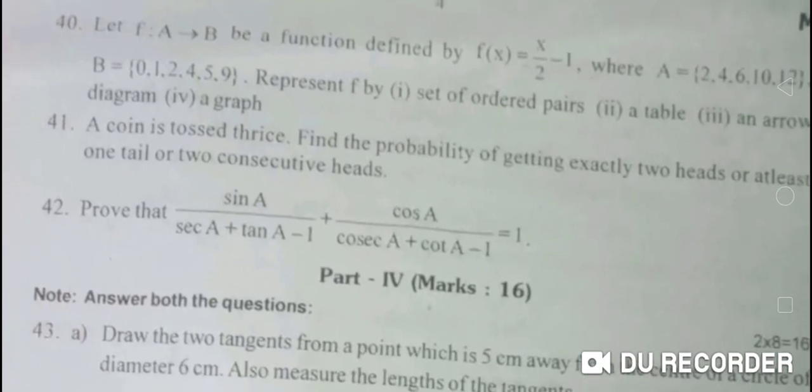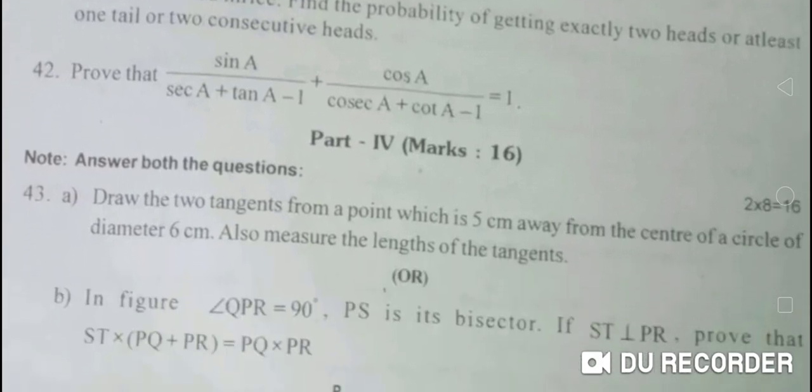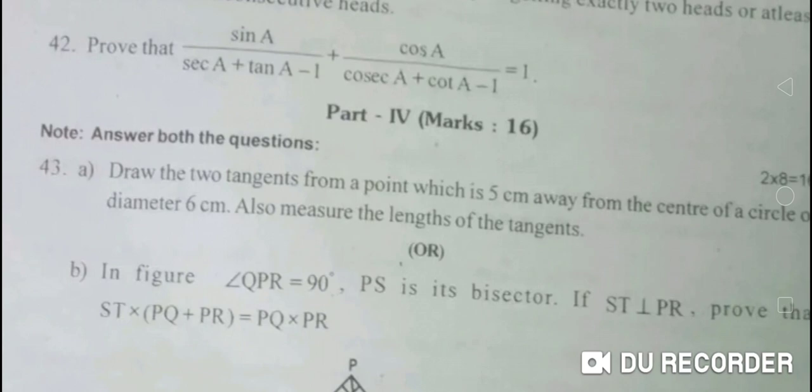Next, there are three questions in Part 4. Part 4 is one graph and one geometry. This graph and geometry is 8 marks each. Here are some benefits.